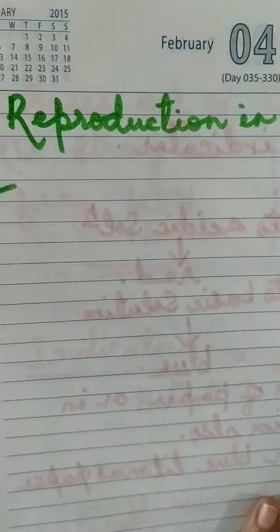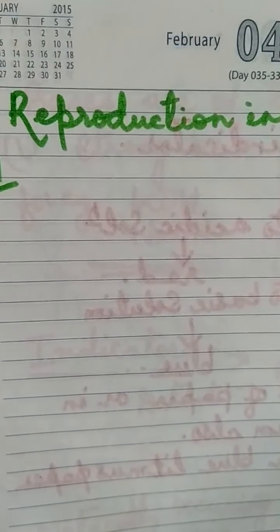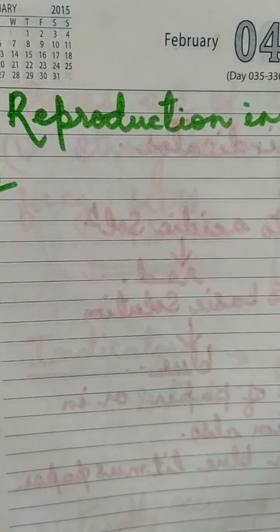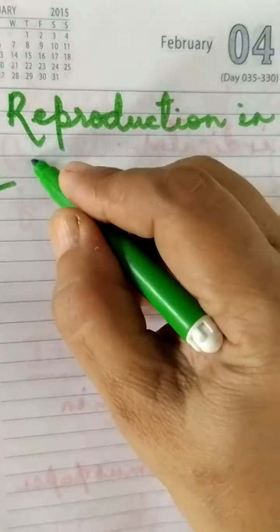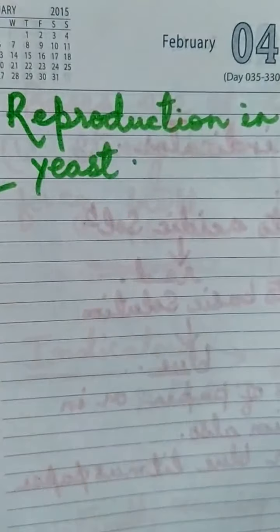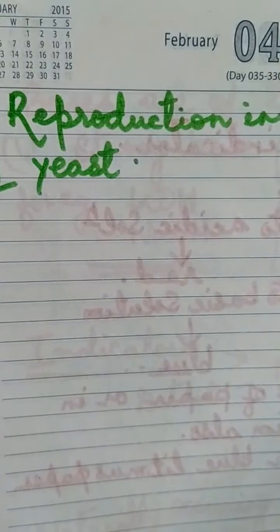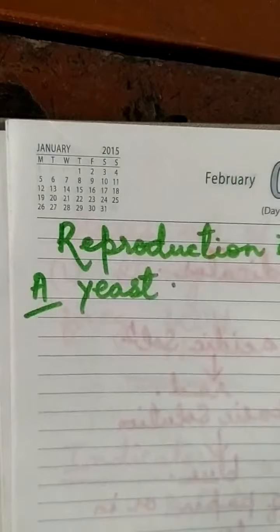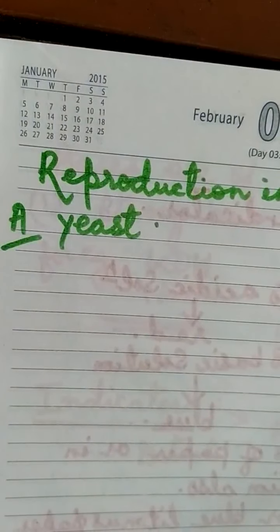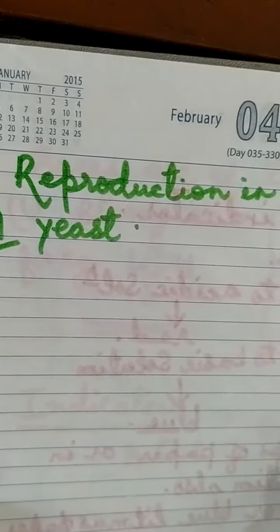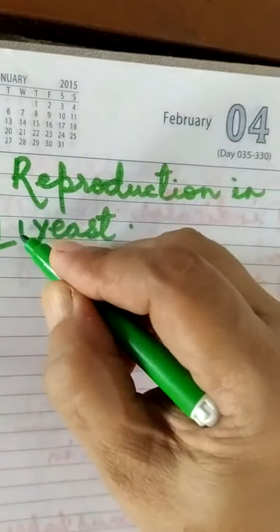The first question is: dash reproduces through the process of budding. The answer is yeast — yeast reproduces through the process of budding. The second question is: pollen grains are produced by — the answer is anther.